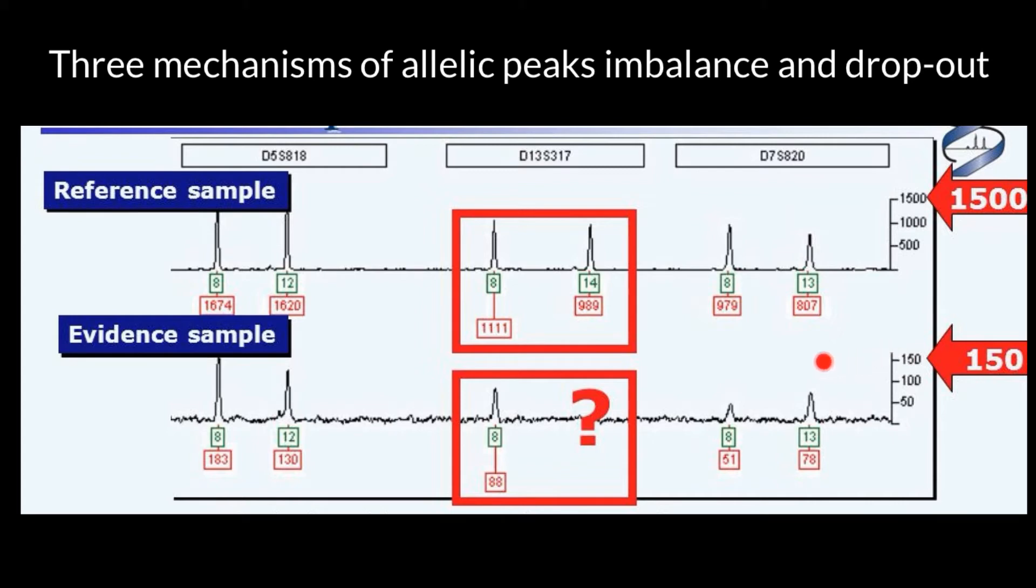And normally we do not analyze such peaks at all because everything below 150 relative fluorescent units usually is a threshold for our analysis. And this would be considered just noise. But when we take samples from a crime scene, it is very common that quantities would be just minute quantities. And we still have to analyze such electropherograms.